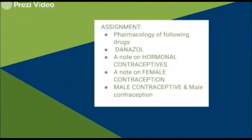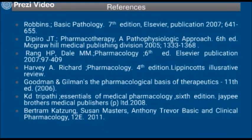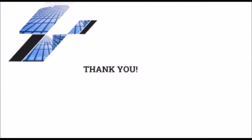Here we have some assignments: you can go through danazol, and there are two important notes required. The university sometimes asks for five marks on: hormonal contraceptives, a note on female contraception, and male contraceptives and male contraception. These notes are given in the books. These are the references I followed — most of the part taken from Katzung. Thank you very much for listening to this video. I hope you can all understand these videos on estrogen and progesterone. By this, the most important female sex hormones are completed. I hope you can go through it well — please post me your doubts. Thank you.